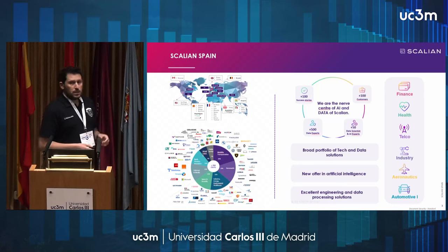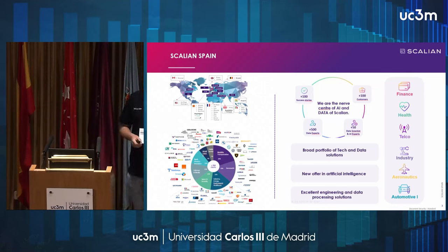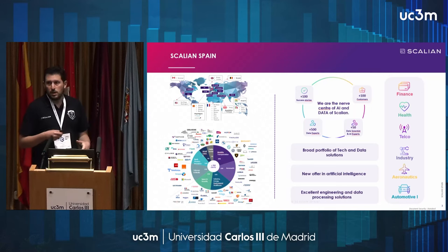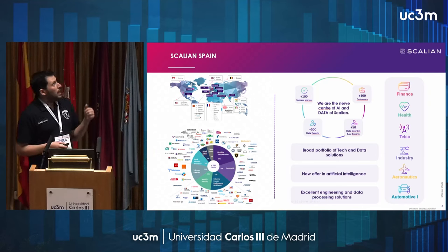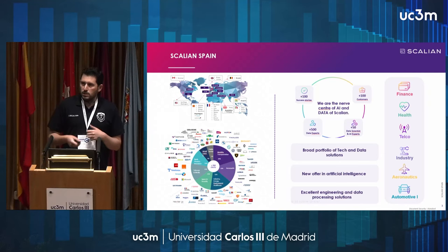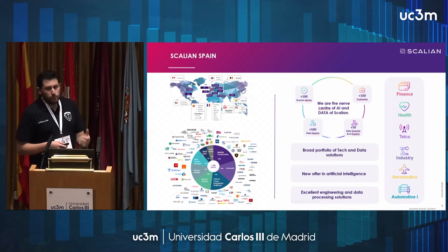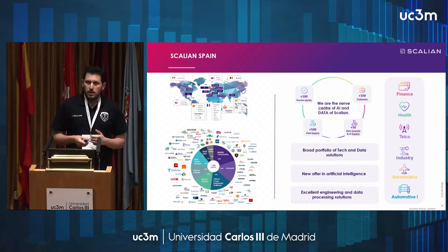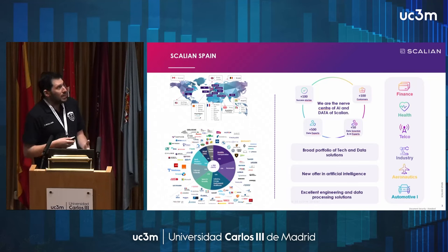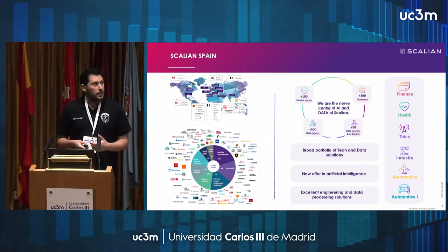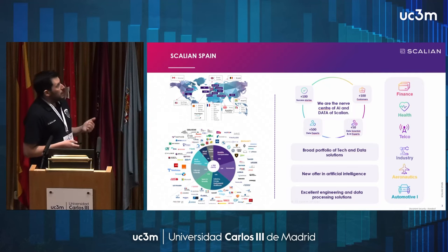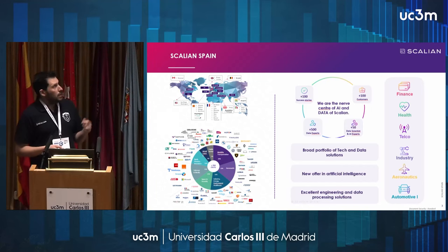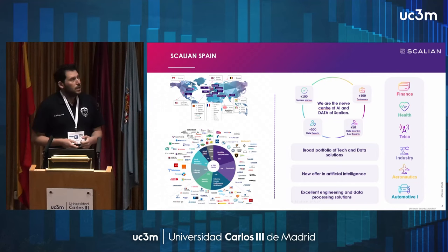Scallion is a multinational company founded in France and currently present in several countries, including Germany, Italy, Spain, and the UK, among others. Our company is mainly focused on big data and artificial intelligence solutions, but we also have an important team dedicated to software development for embedded systems. Scallion specializes in providing solutions in areas such as finance, automation, industry, and aeronautics.